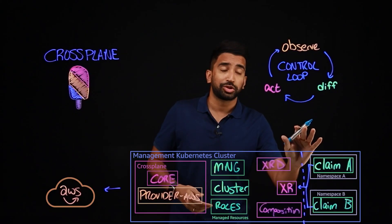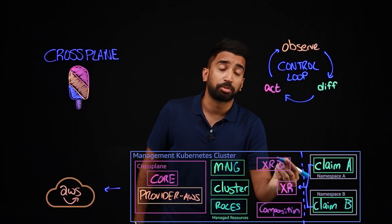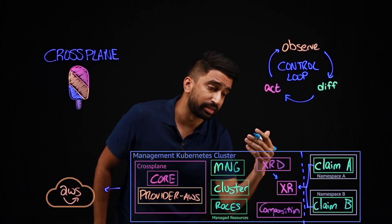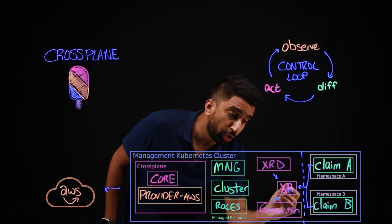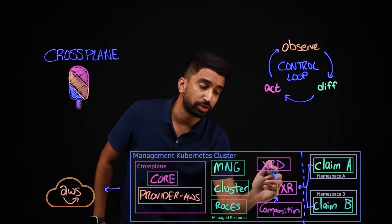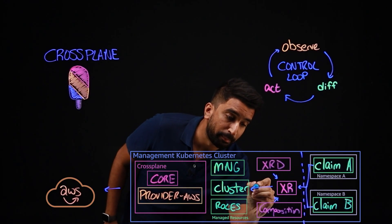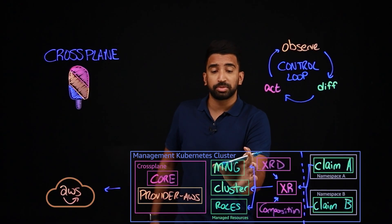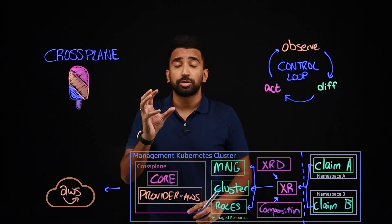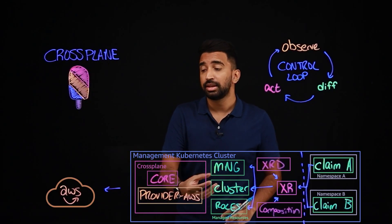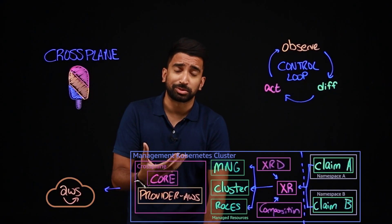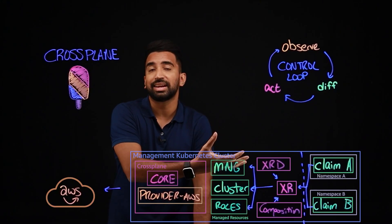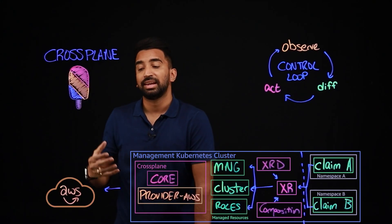Now let's walk through this flow. A claim gets created by the app team, which in turn will provision a composite resource. That composite resource is defined by a composite resource definition and composed by a composition. That composite resource will then create managed resources — and it's going to manage those managed resources — so the managed node group, the cluster, and the roles. The controller and Kubernetes API will detect this, and using the underlying AWS provider and the credentials we provided, it's going to spin up the necessary pieces of the infrastructure for our EKS cluster as we've defined in AWS.